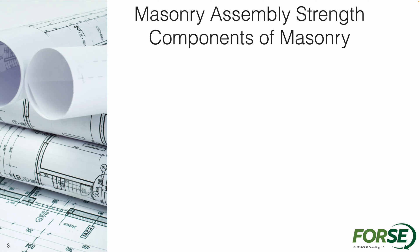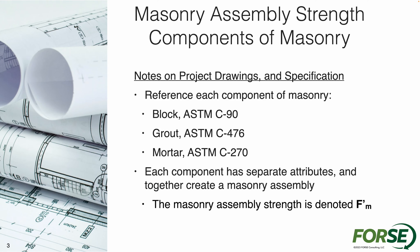The first things we're going to focus on is the strength of the masonry wall. We're going to have to reference all those different element components of the masonry wall — the block, the grout, and the mortar. Each of those different components has different attributes, and together they form a masonry assembly. We also want to define the masonry assembly strength, which is going to be denoted as F'M.